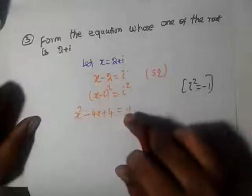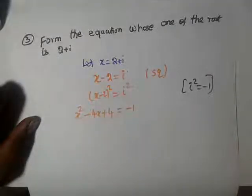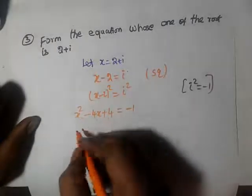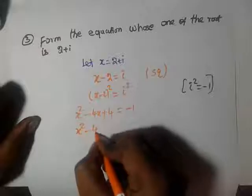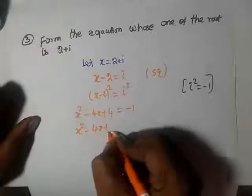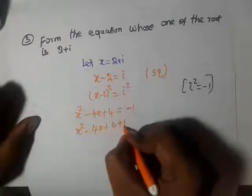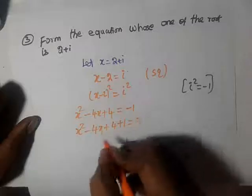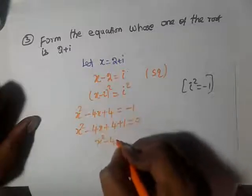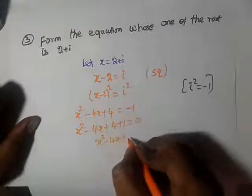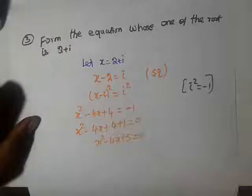So we get x² minus 4x plus 4 equals minus 1. Bringing minus 1 to the left gives x² minus 4x plus 4 plus 1 equals 0, that is x² minus 4x plus 5 equals 0.